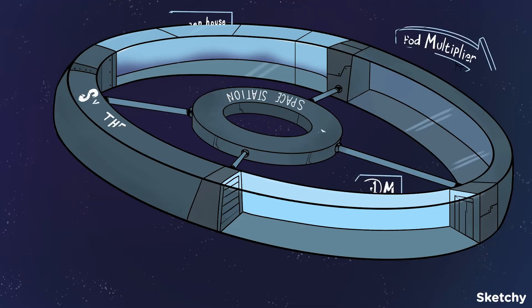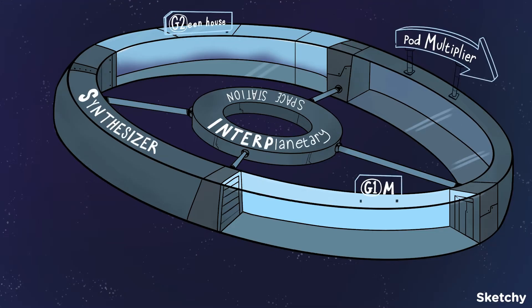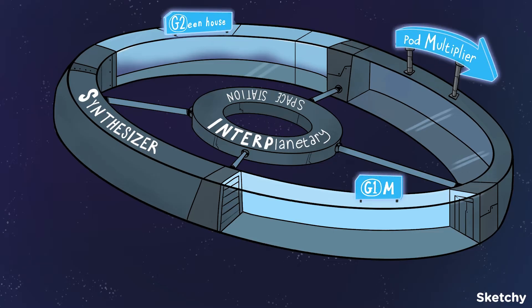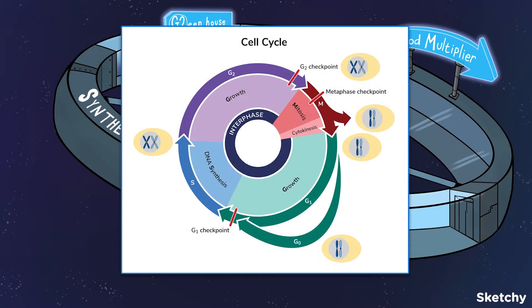The cell cycle is a series of events where a eukaryotic cell grows, replicates its genome, and then undergoes division. The cell cycle has two main parts: interphase and the mitotic, or M-phase.